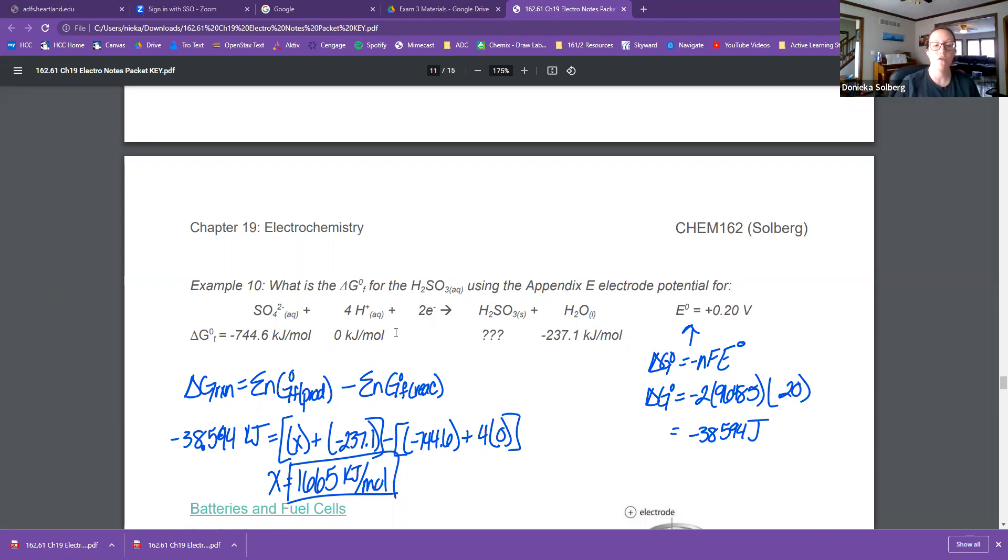Make sure you take your coefficients into account. This one does have all ones except for hydrogen. So I have the four here, but it's times zero. And then solve for X. I get negative 665 kilojoules per mole. That would be the delta G not of sulfurous acid. Okay, so just another type of problem using everything that we've learned.